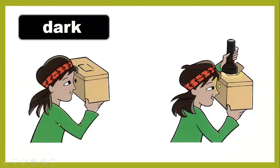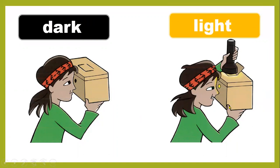Now look at the two pictures. The first picture shows darkness because there is no light, so she cannot see well. In the second picture we have a light source — a torch — and the girl can see well because there is a source of light.